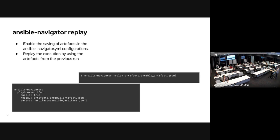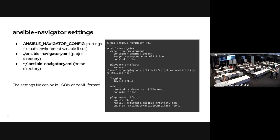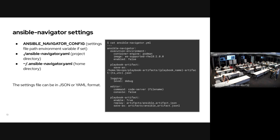Once you have the artifact stored, you can use ansible-navigator replay and pass the artifact details. Most Ansible Navigator parameters can be passed on the CLI — execution environment, environment variables, and more — but during development it's not easy to pass everything on the command line. You can instead use the ansible-navigator configuration file, where you configure the execution environment, enable or disable it, and other settings.